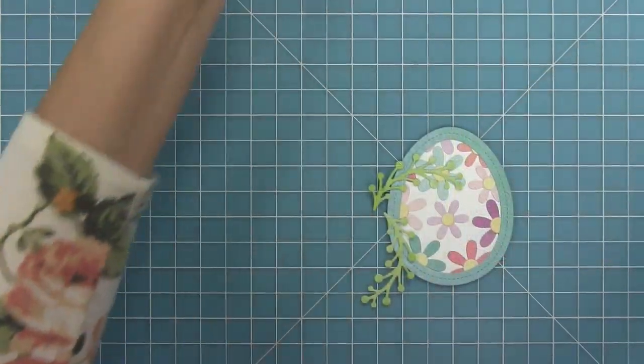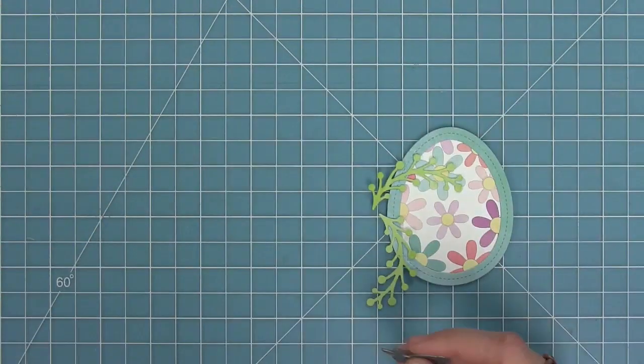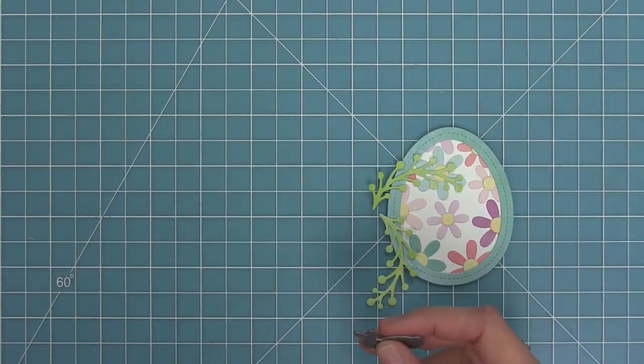Next I'm going to take out my dies from my spring house add-on for the scallop treat box and I'm just going to use that cute little bunny there and I'm going to die cut that from some ground coffee cardstock so we'll have this cute little bunny to add to our easter egg.